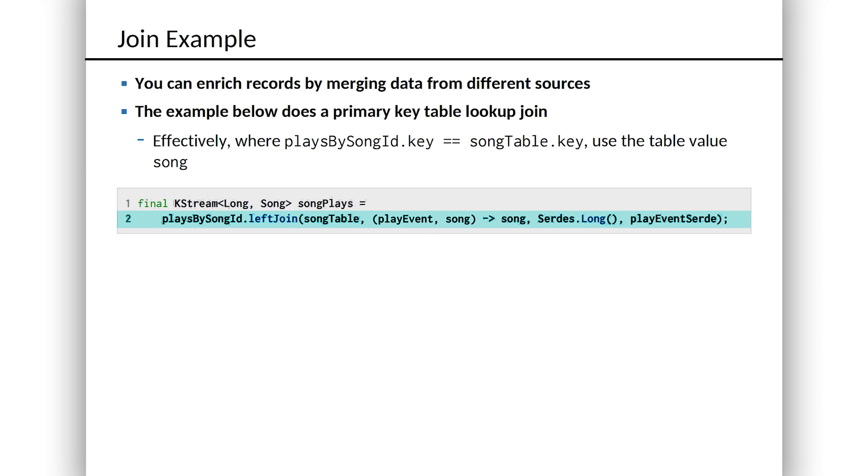When the key of plays by song ID, which is the song ID, is the same as the key in song table, and of course that's going to be song ID, that's fairly intuitive, then we're going to have a match.